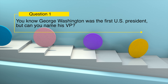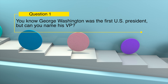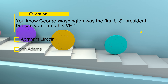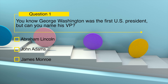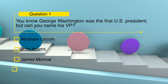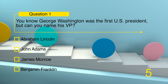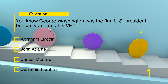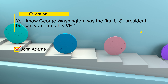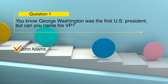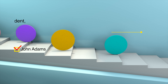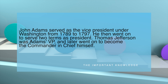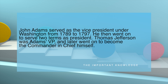You know George Washington was the first U.S. president, but can you name his VP? Abraham Lincoln, John Adams, James Monroe, or Benjamin Franklin? John Adams served as the vice president under Washington from 1789 to 1797.